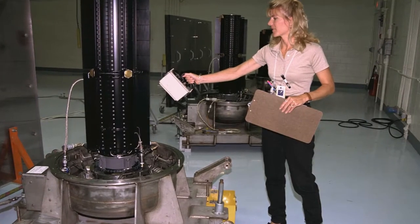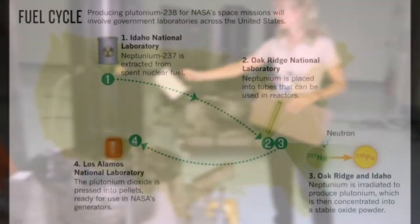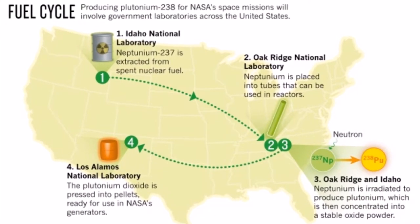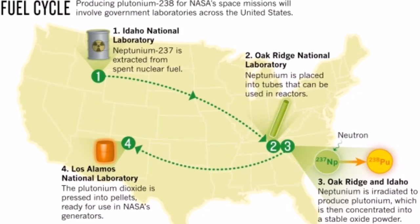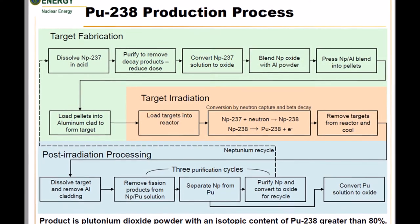Currently, there is only enough plutonium-238 to power three more batteries for space missions. Luckily, though, recently, the Department of Energy working together with NASA has succeeded in making plutonium-238 for the first time in 27 years here in the U.S.